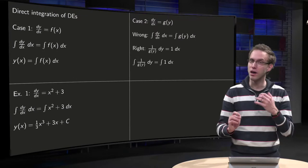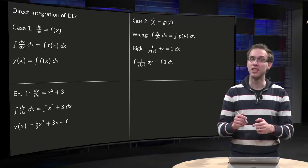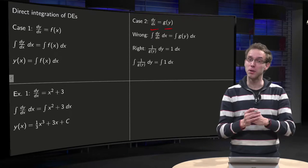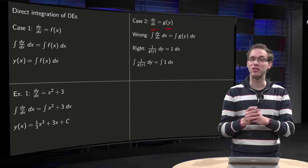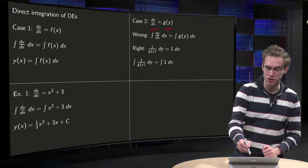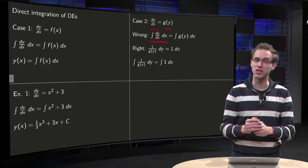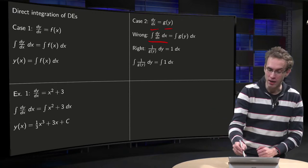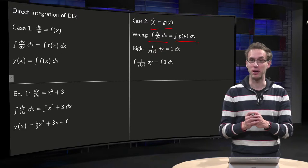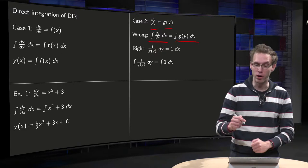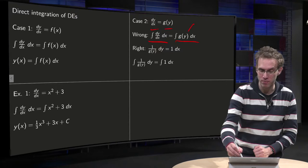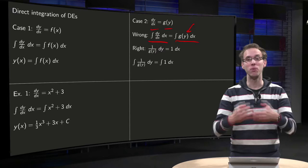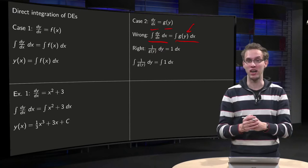Can we always do that? Let's take a look at the second case. If dy/dx equals g(y), so now the right-hand side only depends on y. What would happen if we try to do the same trick? We integrate with respect to x on the left-hand side — we are happy because it yields y(x) — but on the right-hand side we also try to integrate with respect to x. That doesn't work, because on the right-hand side we have g(y), and this y depends on x but we do not know yet how, so we cannot integrate the right-hand side.